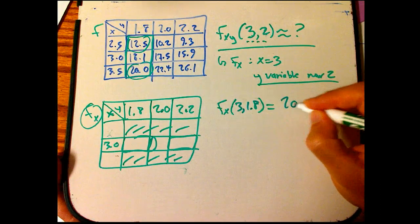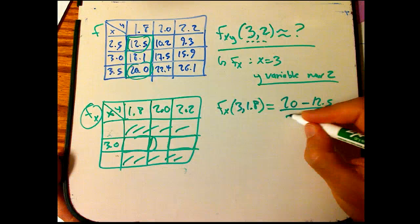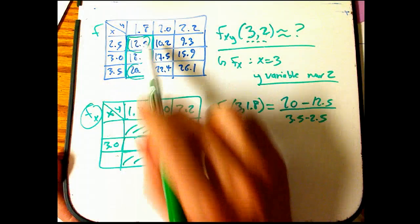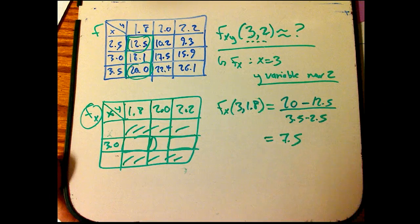And so I'm going to take 20 minus 12.5 over 3.5 minus 2.5. Rise over run. Change in the output divided by change in the input. In this case, that's x. Now that happens to be 1, and so I get 7.5.